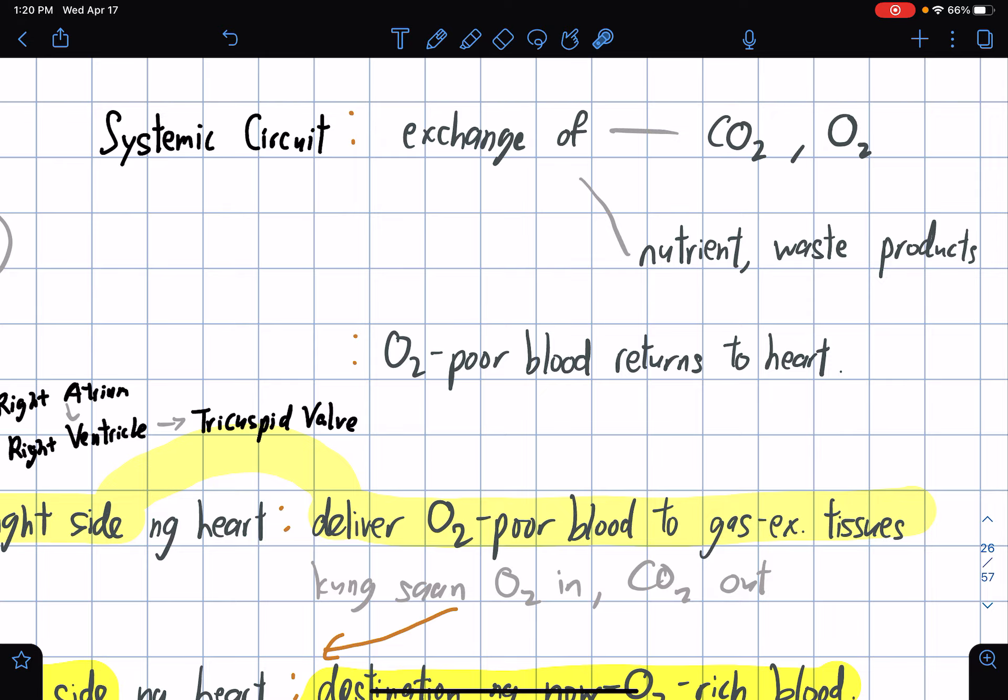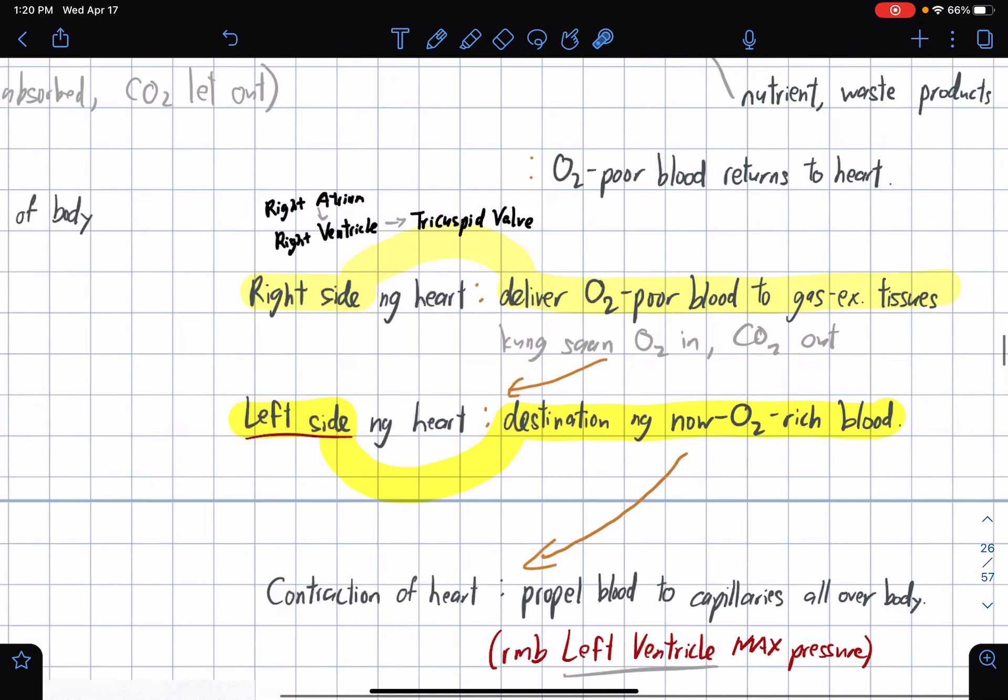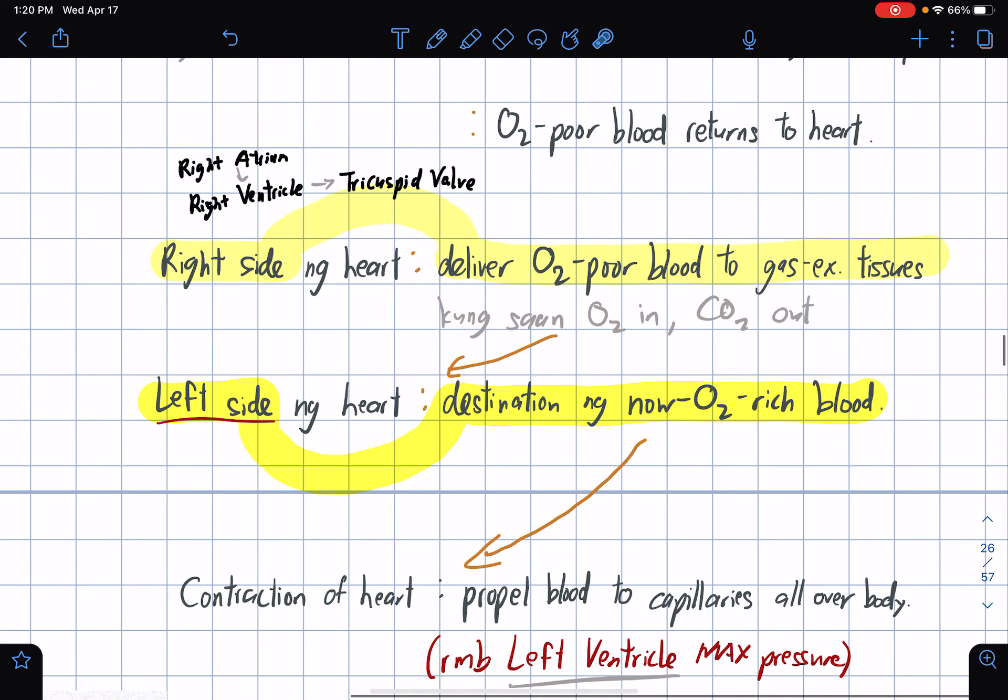Systemic circuit is the exchange of carbon dioxide and oxygen and exchange of nutrient and waste products. O2-poor blood returns to the heart. At the right side of the heart, deliver O2-poor blood goes to the gas exchange tissues.